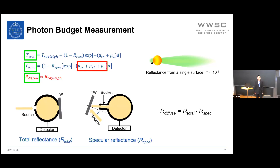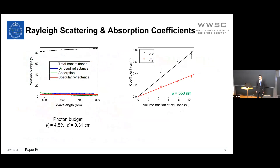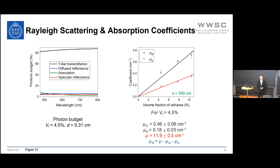An example photon budget is presented. After solving the three equations from experimental data, the Rayleigh scattering coefficient and absorption coefficient are both linear with cellulose volume fraction. For example, at a cellulose volume fraction of 4.5%, both are much smaller than the extinction coefficient. The forward scattering coefficient therefore constitutes the dominant component of the extinction coefficient and dominates the scattering process during light–transparent wood interaction.